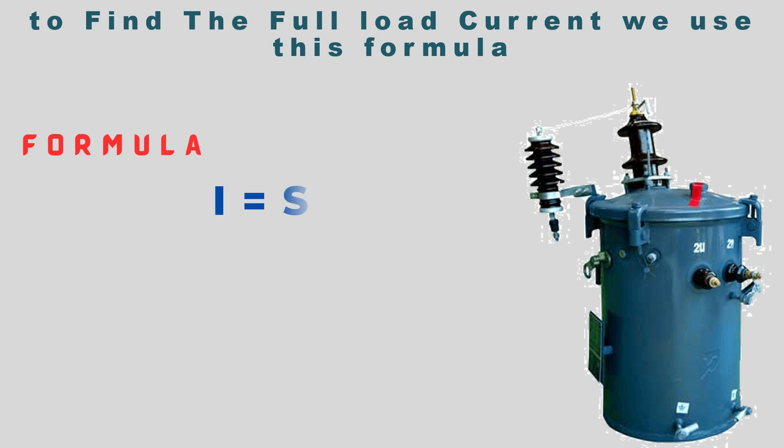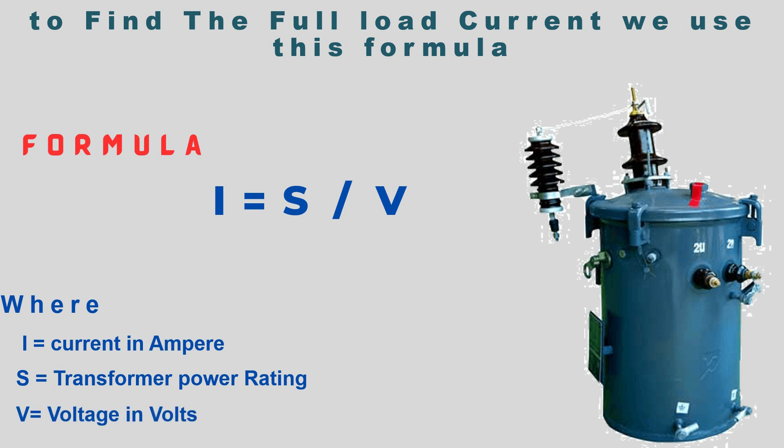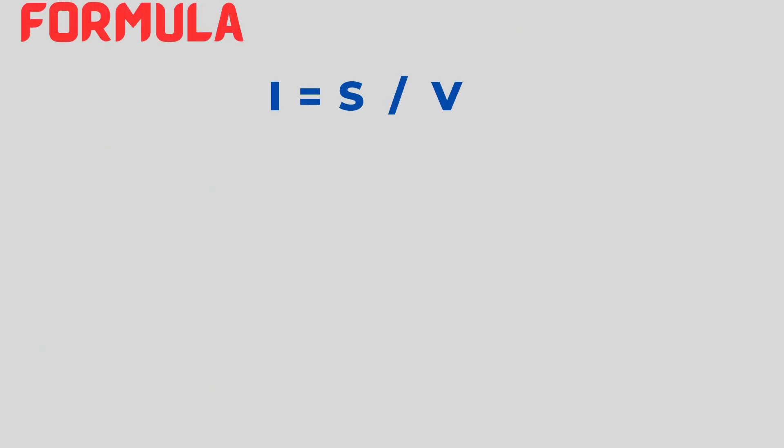I equals S divided by V, where I is current in amperes, S is transformer power rating in VA or kVA, and V is voltage in volts. Using this formula, we can calculate the current for both the primary and secondary windings.